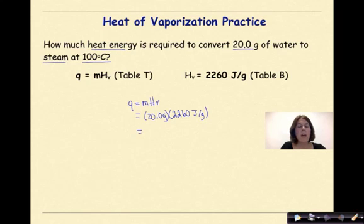Grams cancel grams. And if we multiply these together, our Q is 45,200 joules. And again, we could put that into scientific notation if we wanted to.